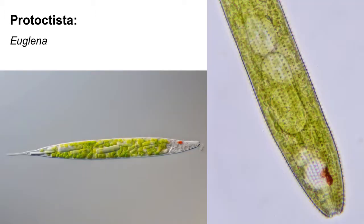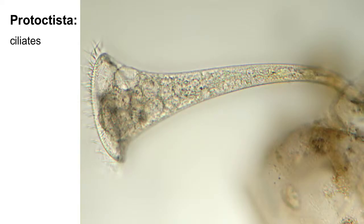Euglena has chloroplasts, but they are different from the chloroplasts that plants have. This unicellular organism belongs to the ciliates. A famous member of the group is paramecium. Ciliates have cilia, which they can use either for moving around or, in this case, for creating a flow of water that can bring food to the cell.